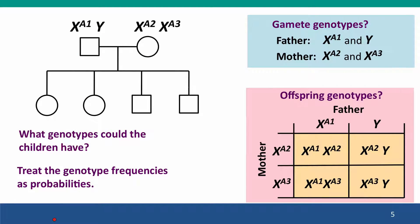Let's make this more concrete with a pedigree example. Here the father has allele A1 and the mother has alleles A2 and A3, all X-linked. What genotypes could the children have? The easiest way to deal with these problems is to use a mating square, just treating the frequencies as probabilities — one-quarter probability for each cell.